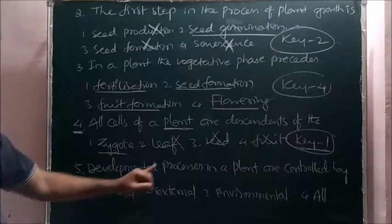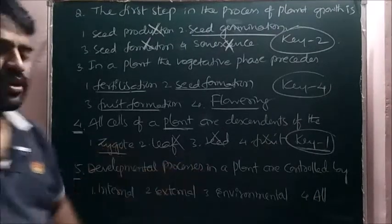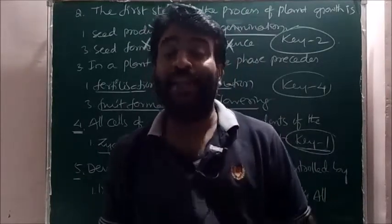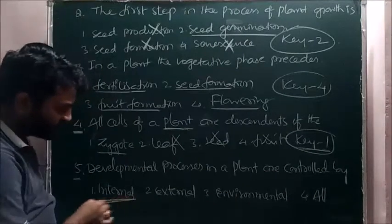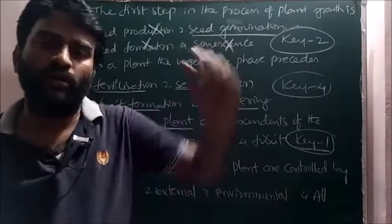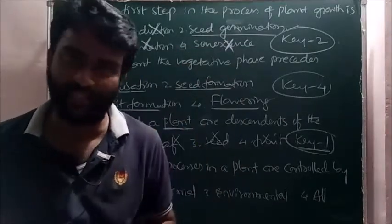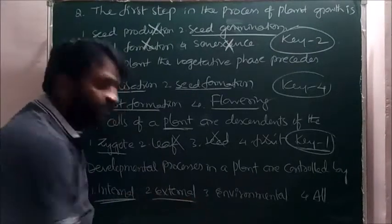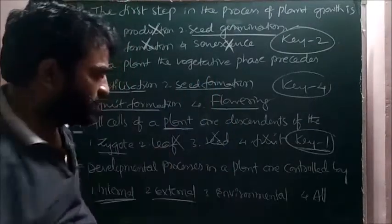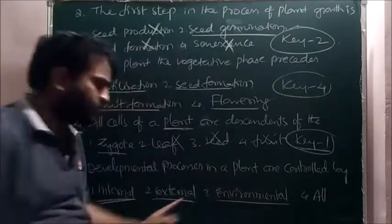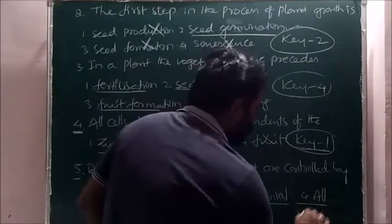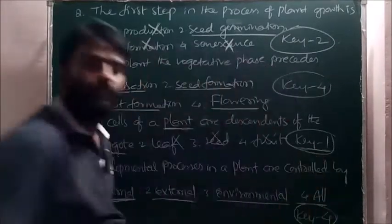Next question number five: developmental processes in a plant are controlled by. It means developmental process means growth or differentiation. All these are controlled by what? Intrinsic factors, plant factors, internal factors means plant factors. Yes, plant factors. To grow tall, that plant should have capital T, capital T according to genetics. Next, external factors like nutrients, light availability, water availability must be available, must be favorable. Next to environmental, second option, third option same. External factors nothing but environmental factors. Hence here correct answer is four, key is four.